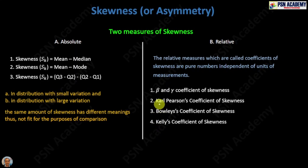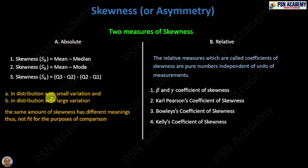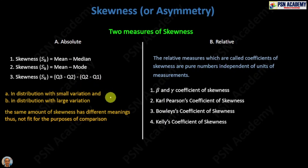In this video we will learn about Karl Pearson's coefficient of skewness, which is the second relative measure of skewness in our list. In the previous video we talked about the beta and gamma coefficient of skewness. The reason we are learning these relative measures is that in absolute measures of skewness, if a distribution has small or large variation, the same amount of skewness will have different meaning, making absolute measures insufficient to give a clear idea about the skewness of a distribution.